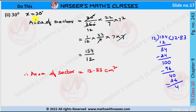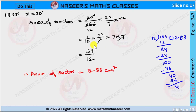Now we replace x with 30 degrees. Area of sector is equal to 30 by 360 into 22 by 7 into 7 squared. We cancel 30 with 360 to get 1 by 12 into 22 by 7 into 7 into 7. We cancel 7 in the denominator and 7 in the numerator. We get 22 into 7 by 12, which is 154 by 12. After dividing 154 by 12, we get 12.83. Therefore, area of sector is equal to 12.83 centimeter square.